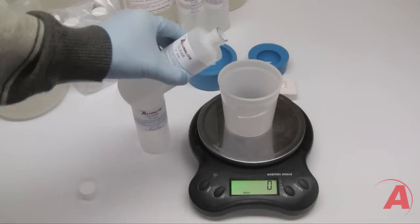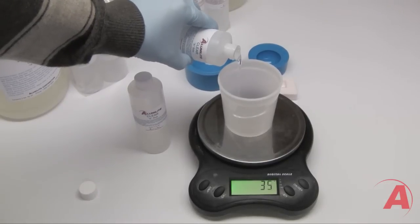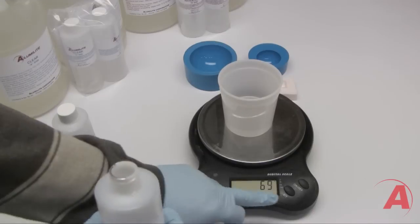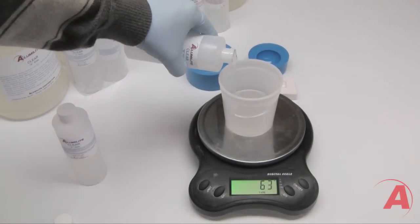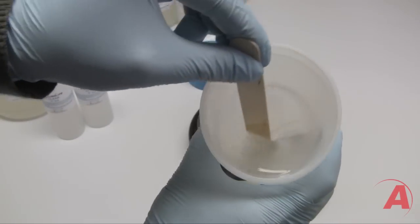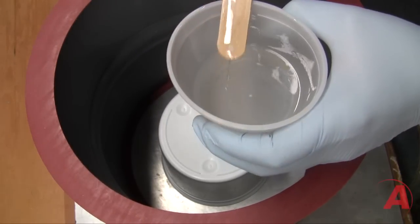Once measured, slowly stir the casting resin, ensuring not to incorporate any more air than necessary. You want to make sure you scrape the sides and bottom so that all the resin is mixed, and watch to ensure that all the striations disappear in the system. Once thoroughly mixed, you should have a clear casting resin.